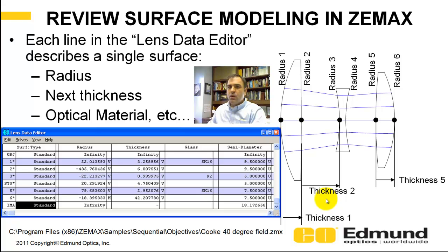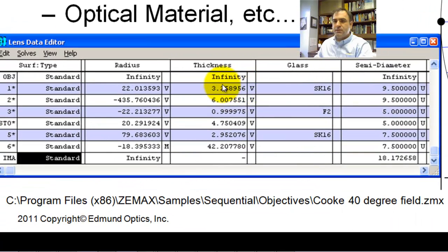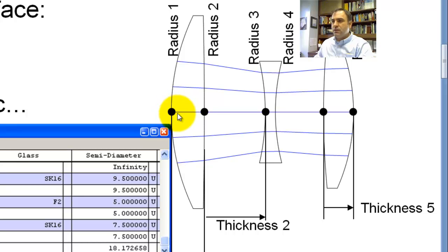So in review, when you enter a prescription in ZMAX, you enter surface by surface into the spreadsheet: radius, thickness, optical material, semi-diameters. And again, it progresses in the order that the light is going to see it.